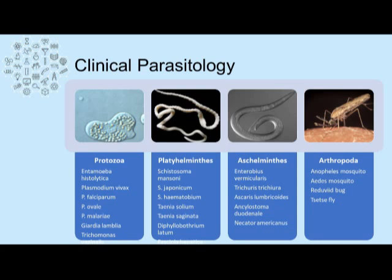The next phylum is Platyhelminthes, or the flatworms, which include Schistosoma mansoni, Schistosoma japonicum, Schistosoma haematobium, Taenia solium, Taenia saginata, Diphyllobothrium latum, and Fasciola hepatica. Next, we have the phylum Nematoda, which are the roundworms, and include Enterobius vermicularis, Trichuris trichiura, Ascaris lumbricoides, Ancylostoma duodenale, and Necator americanus — the last two being hookworms.